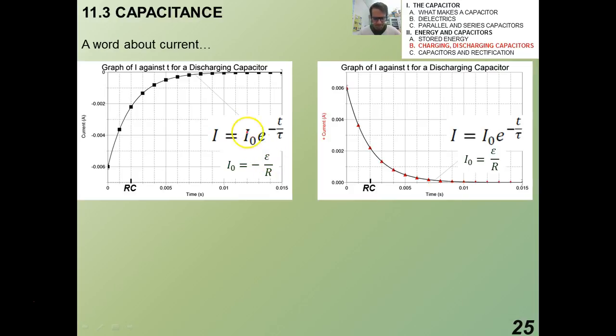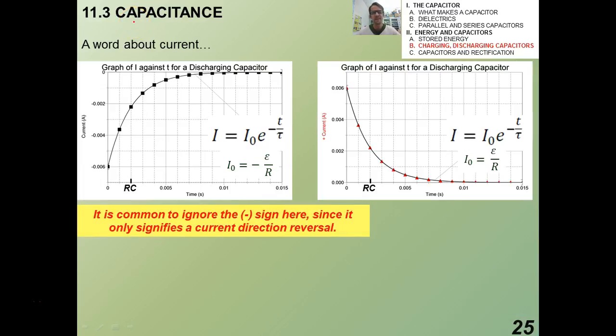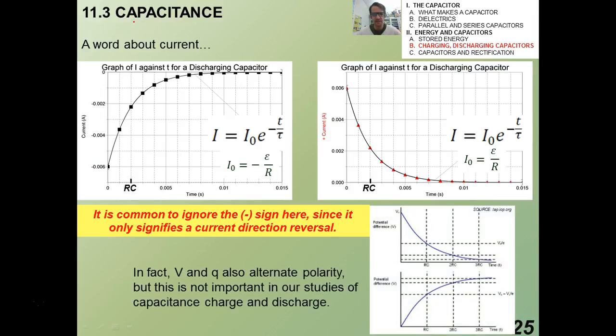So a little bit more about current. All right. So the IB is okay with you having your graph like this, where I_0 is V over R or epsilon over R. Really what it is is this. And really the only difference, it's very common to ignore the negative sign. The only difference is the negative sign. It still is delivering the same amount of energy, the same amount of power, right? But the point is that it only signifies a current direction reversal. And in fact, that being the case, of course, the potential difference also reverses. And Q also alternates polarity, right?